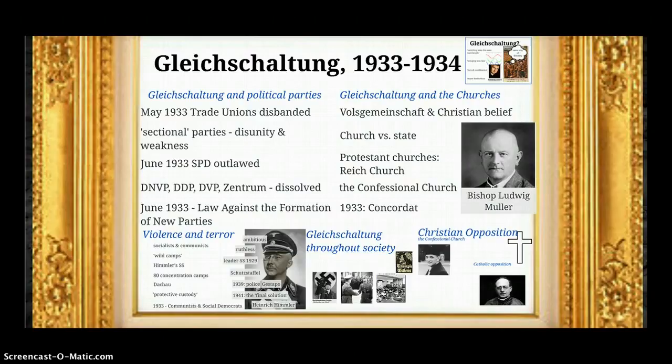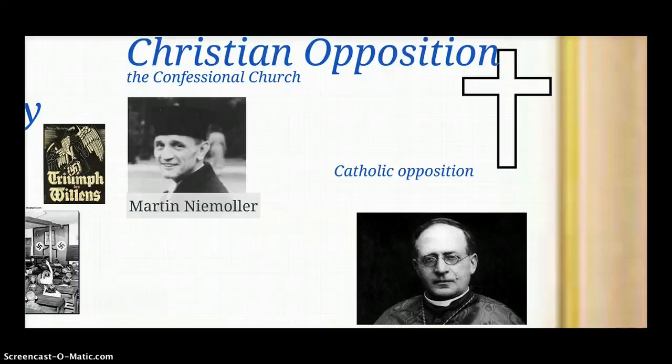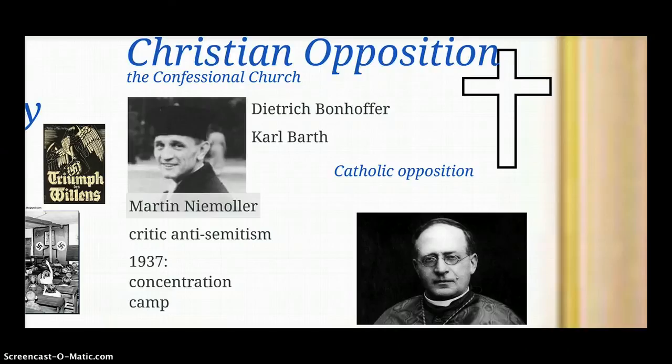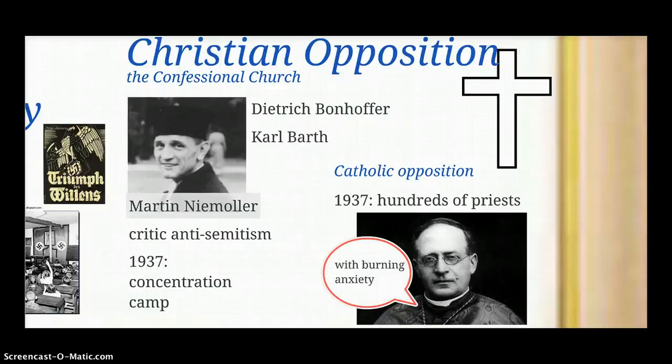There was Christian opposition. Martin Niemöller of the Confessional Church became a critic of brutal anti-Semitism and the Nazis' anti-Jewish policies. In 1937, he was sent to a concentration camp. Other famous Protestant opponents of the Nazi regime who suffered as a consequence included Dietrich Bonhoeffer and Karl Barth. There was also opposition within the Catholic Church despite the Concordat — by 1937, hundreds of priests had been defrocked and many sent to concentration camps where they would die. The Pope later issued a statement criticising the mistreatment of Catholics and the Nazi regime itself.